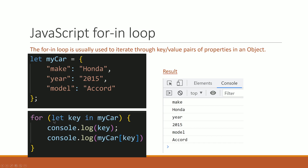Now in the for...in loop, another key is to do your credit — you do the year. The object here: make, model. The object model, corporate. Iterating over the car object properties.